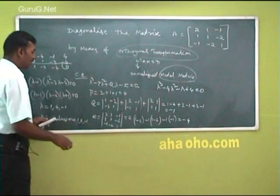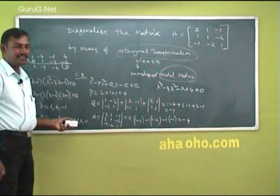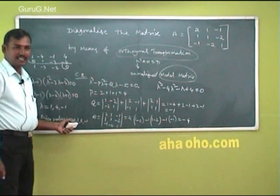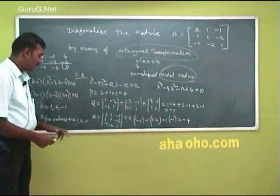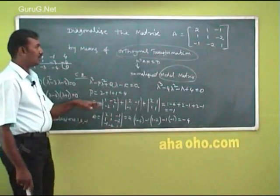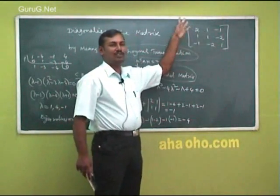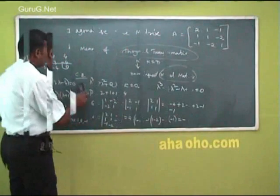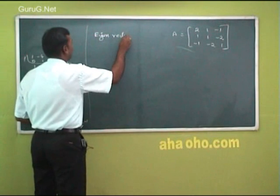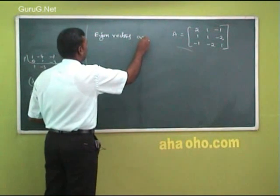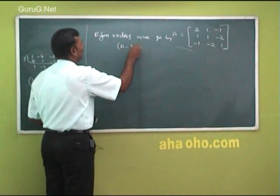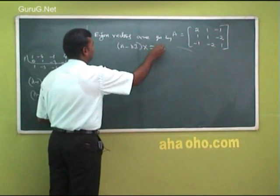How can you verify these eigenvalues are right or wrong? You know the property: the sum of the eigenvalues is equal to the sum of the leading diagonal elements. So add these eigenvalues — you may get 4. The sum of the leading diagonal elements is also 4. Now we go for the next. The eigenvectors are given by the equation (A minus lambda I) X equal to 0.